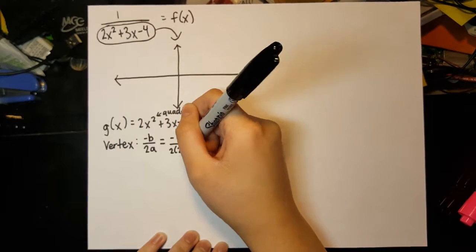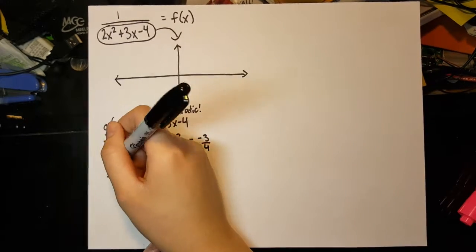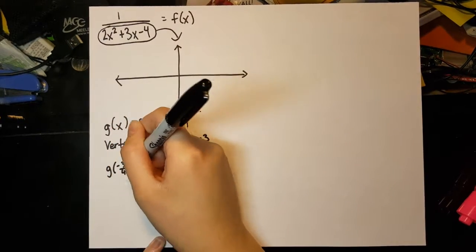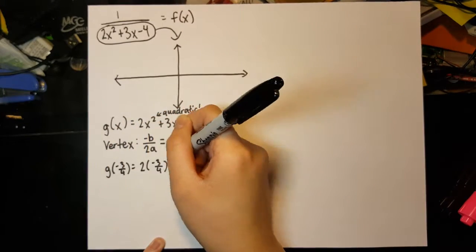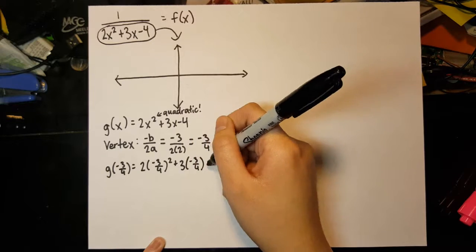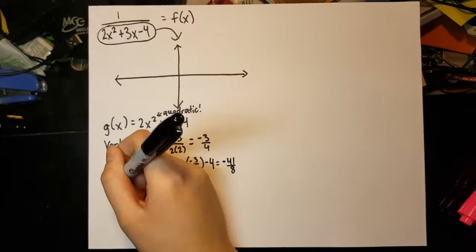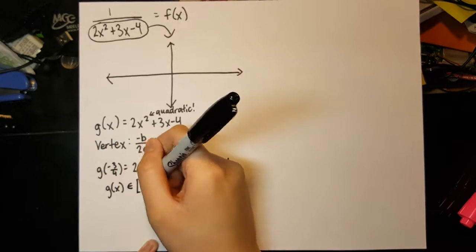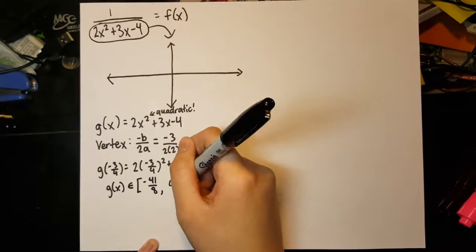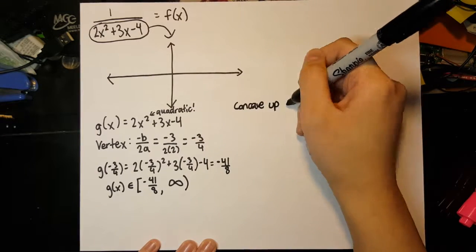Making a sign graph for the derivative of this equation, we can find that this quadratic is concave up, and that x equals negative three-fourths is a minimum. Thus, the range for the denominator is negative 41 over 8 to infinity.